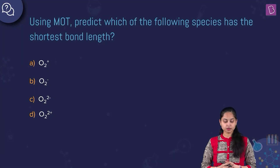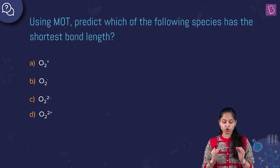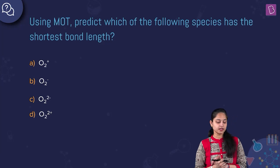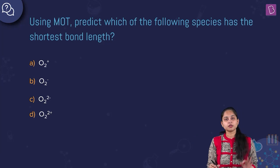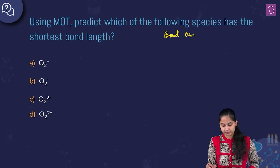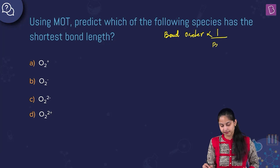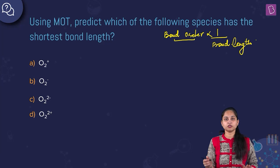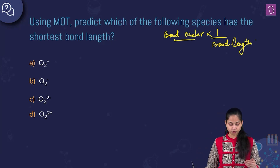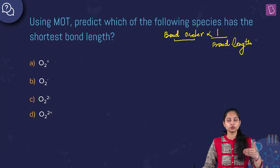Using molecular orbital theory, predict which of the following species has the shortest bond length: O₂⁺, O₂⁻, O₂²⁻, or O₂²⁺. Bond order is inversely proportional to bond length, so the species with the highest bond order will have the shortest bond length. We need to calculate the bond order for each species.